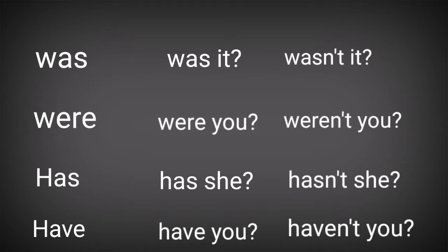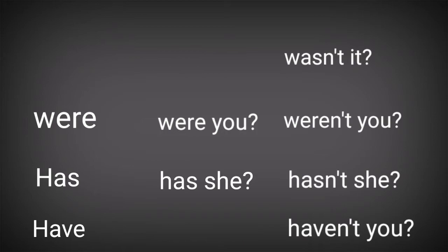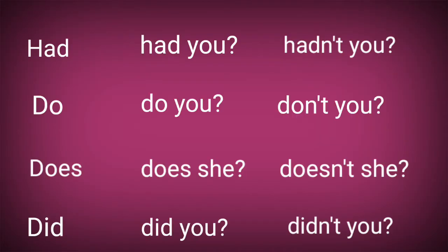Has: positive tag — has she; negative tag — hasn't she. Have: positive tag — have you; negative tag — haven't you. Had: positive tag — had you; negative tag — hadn't you. Do: positive tag — do you; negative tag — don't you. Does: positive tag — does she; negative tag — doesn't she. Did: positive tag — did you; negative tag — didn't you.